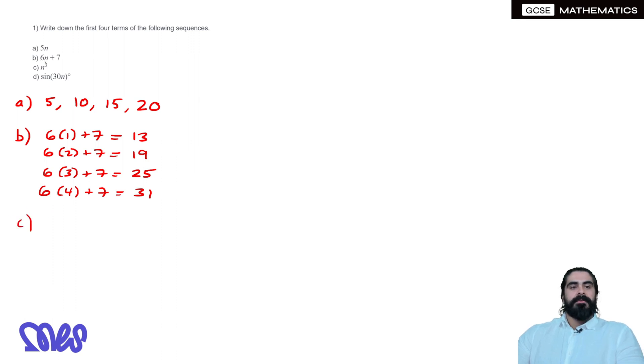Part C, we're going to have 1 cubed as the first term, which is 1, then 2 cubed is 8, 3 cubed is 27, then 4 cubed is 64.